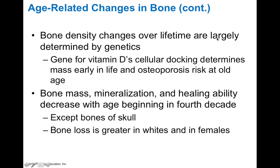Bone density changes over a lifetime are largely determined by genetics, so osteoporosis can run in families and relates to vitamin D metabolism. An individual's vitamin D usage early on can indicate risk for osteoporosis later. Bone mass, mineralization, and healing all decrease with age beginning in the fourth decade — your 30s. Except for skull bones, bone loss is greater in whites and females, making white females especially prone to osteoporosis. One way to prevent osteoporosis is adequate diet — getting enough calcium and vitamin D, preventing inflammation since it promotes resorption, and using your bones, because if you use them, you don't lose them.